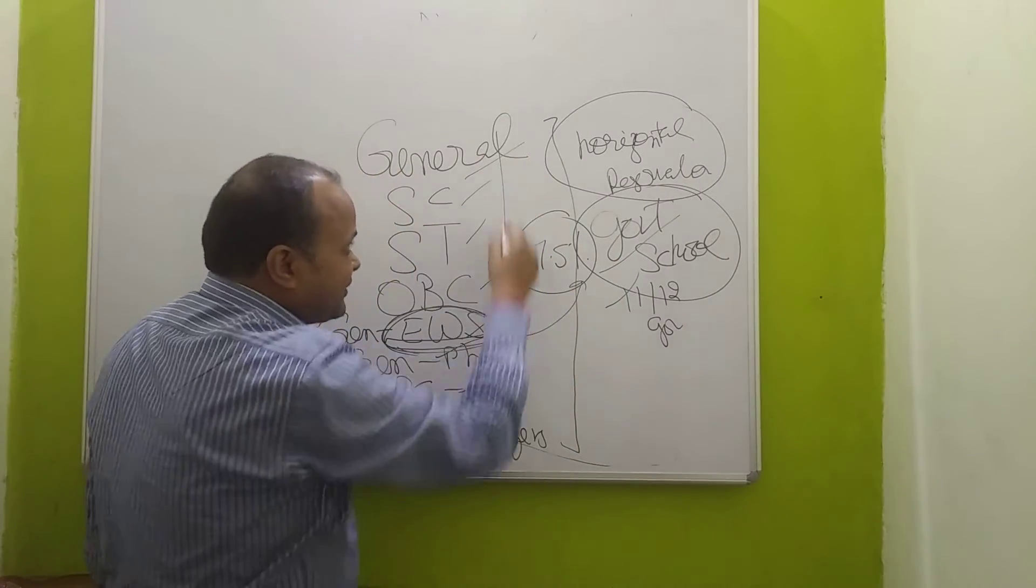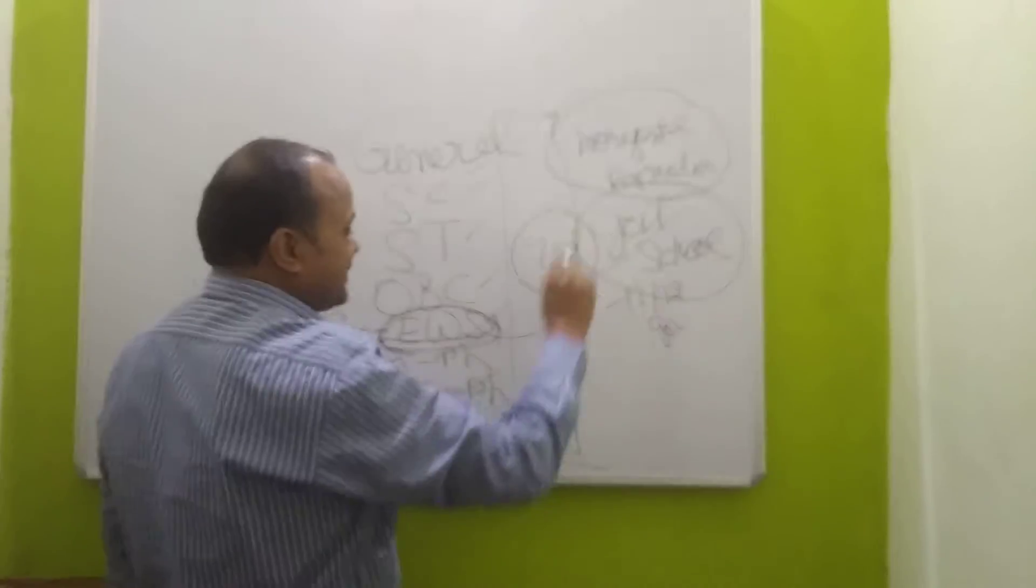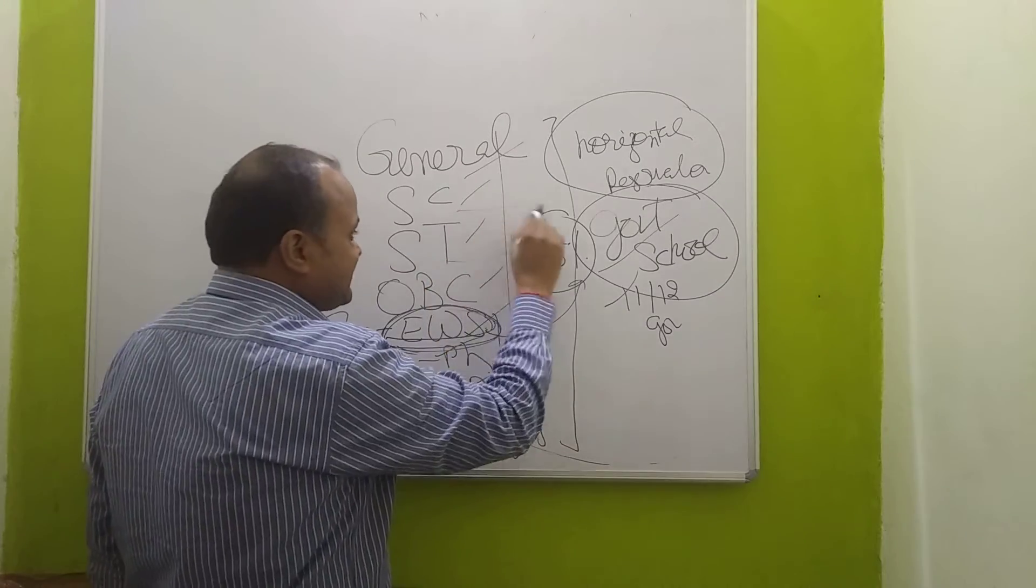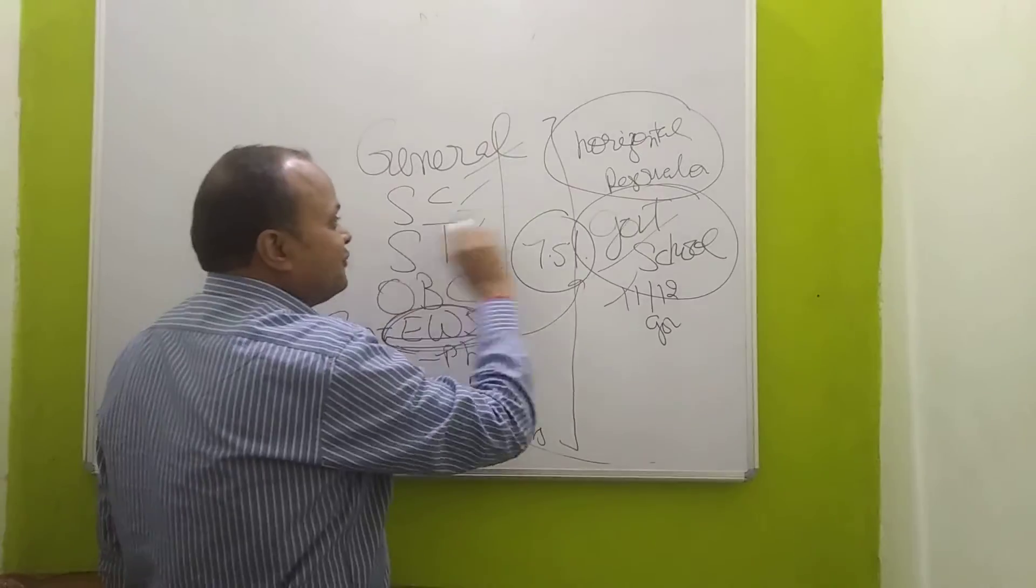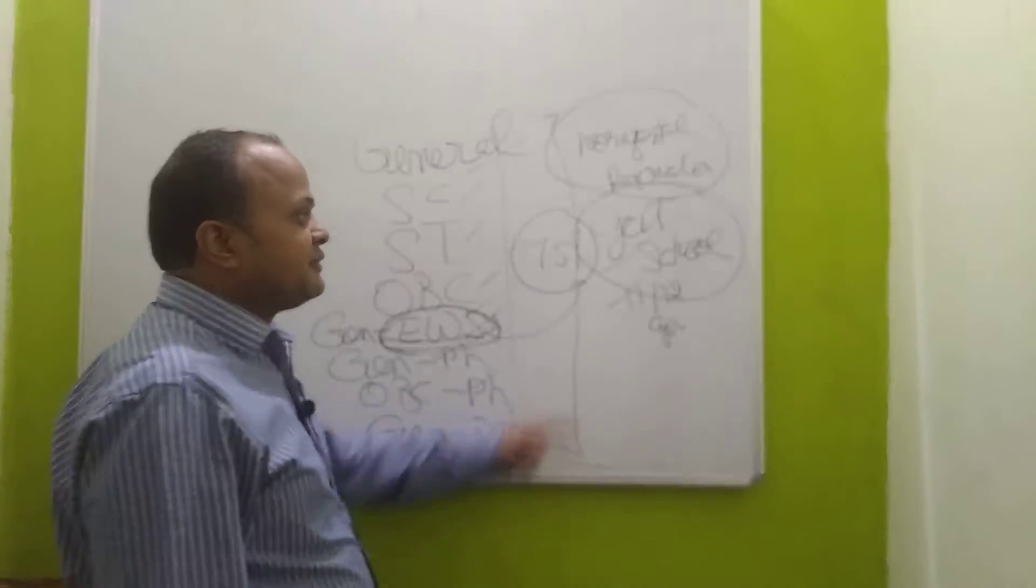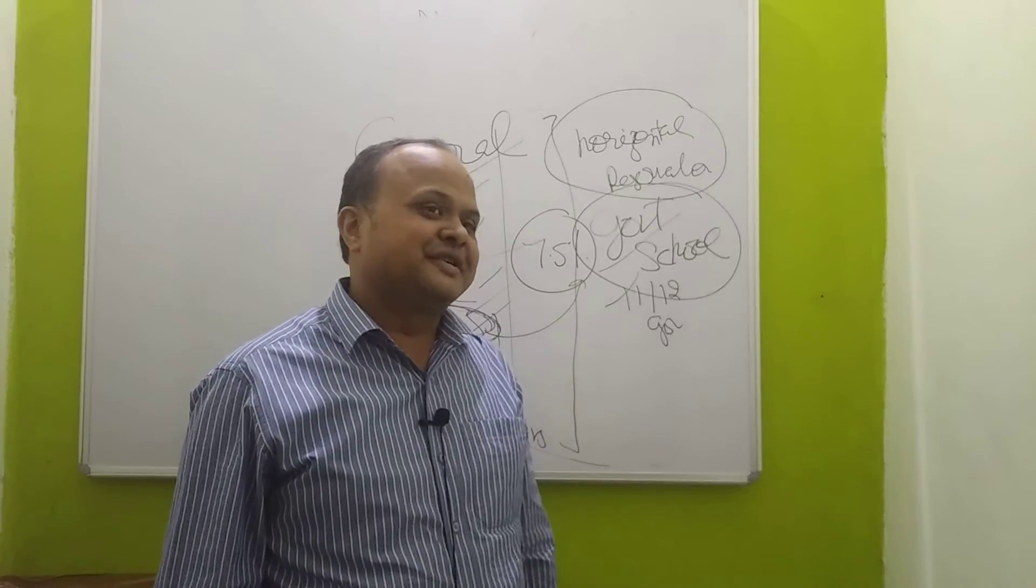It is not only a particular category - from OBC, from SC, from ST, those children will be selected who studied in government school and they will be given reservation.